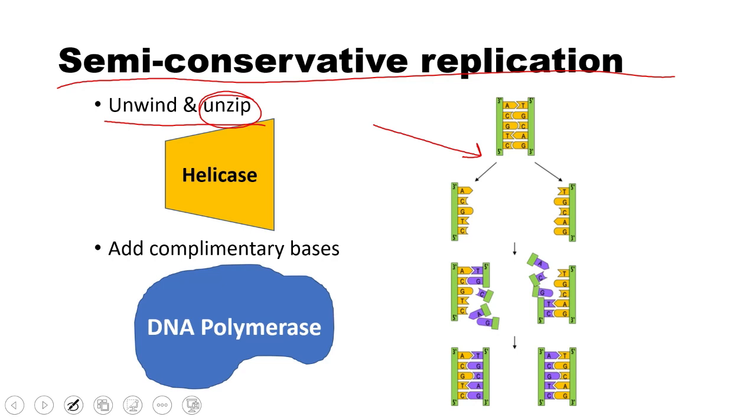Then the most important part that we've been emphasizing, we have to add complementary bases, and that's done by the enzyme DNA polymerase. The name makes sense - it makes DNA polymers. That's the enzyme that does that. And here you see it in action.